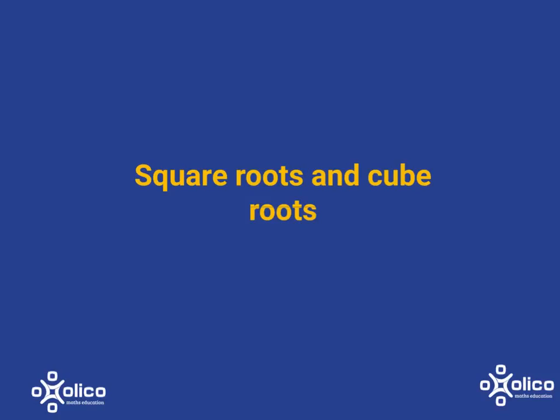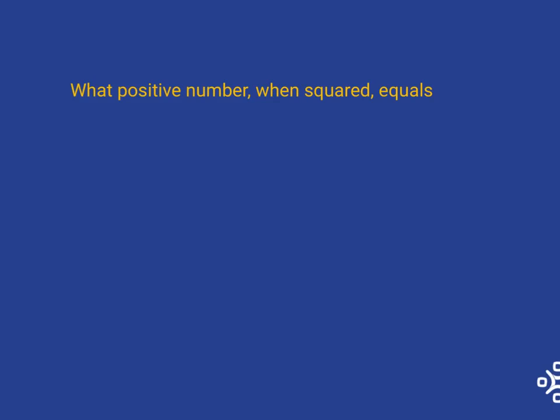We're going to discuss square roots and cube roots. We're going to start by looking at squaring, and the reason for this is that square rooting and squaring are kind of opposite, inverse relations to each other. So square rooting undoes what squaring does.